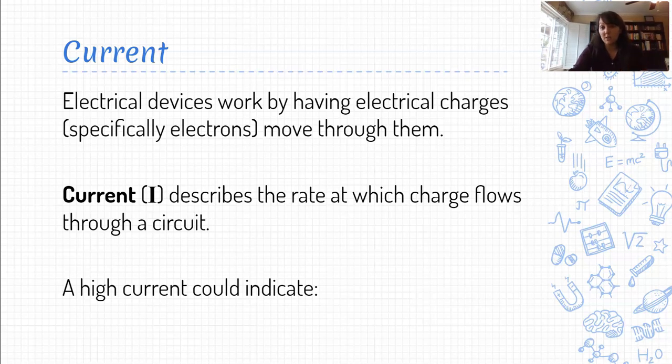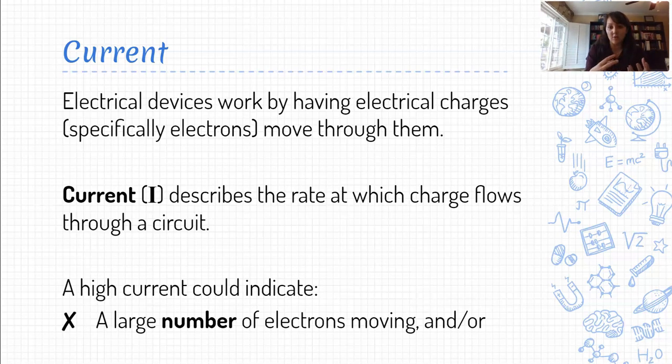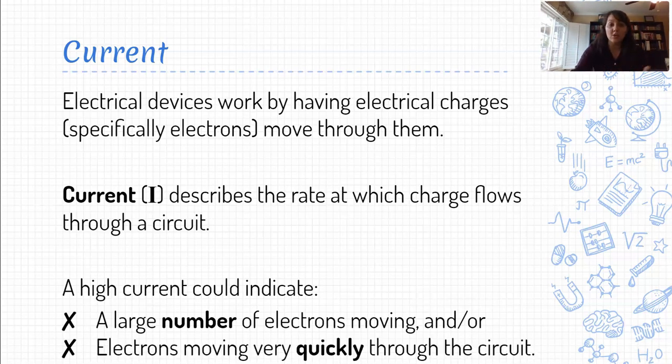Now, a high current can really then mean one of two things. It could mean that we've got lots and lots of electrons all moving together, or it could mean that the electrons that we do have are moving super fast through our circuit. So the same way that when we talked about momentum, momentum is a product of both mass and velocity. So having a lot of momentum could mean having a lot of mass or having a really high velocity. Current is kind of the same idea, that if we have a high current, it either means lots of charges are moving, or the charges that we have are moving really fast, or potentially both.